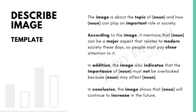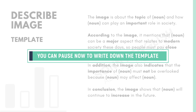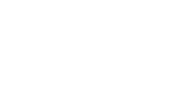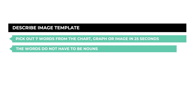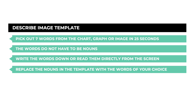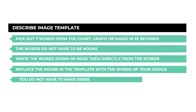Now, how many noun spaces do you count? Seven. So what are you supposed to do? Before we start, please pause the video and copy down the template — this document is not downloadable, so if you want a copy, please write it down. For the describe image template: first, pick out seven words in the 25 seconds given to prepare. Does it need to be a noun or just any word? Any word — we are not scored on grammar in the speaking section. You can write them down or read them off the screen. After the beep, say the template and replace the nouns with the words that you picked.